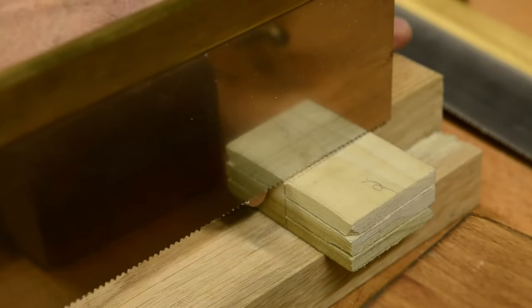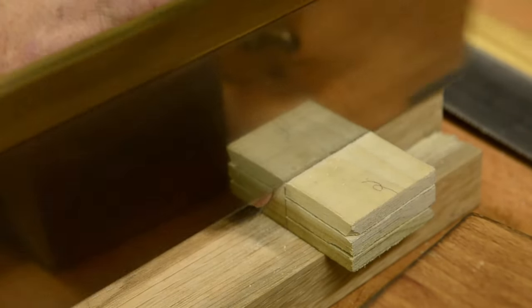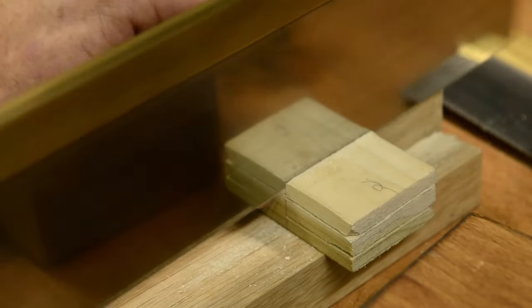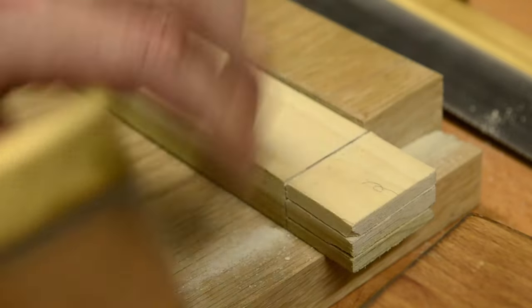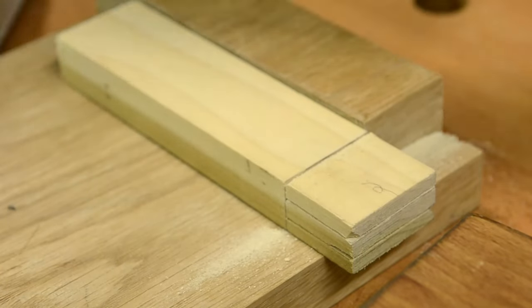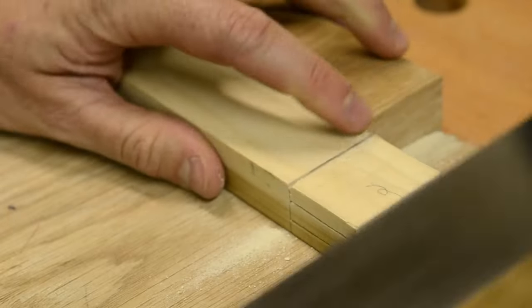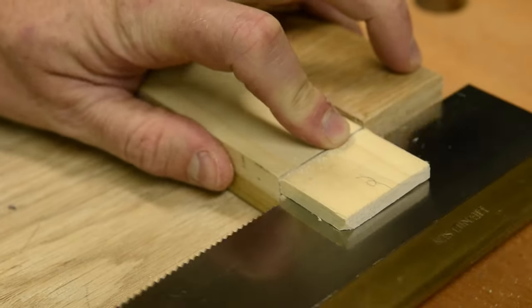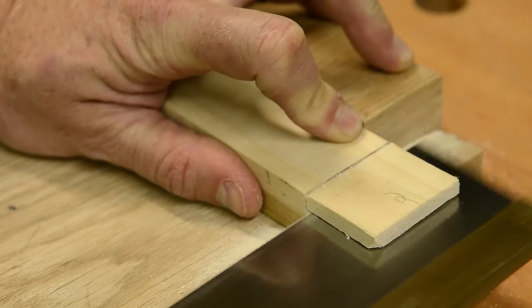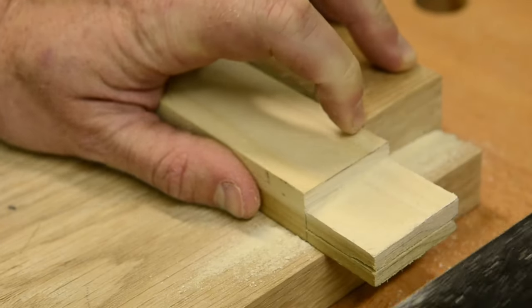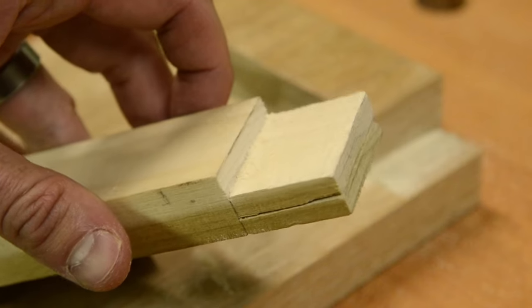Place your crosscut backsaw into the shoulder line and cut straight down to that baseline, being very careful. Either it will pop right off or else you just grab your dovetail saw and slide it in there against the cheek and just carefully trim until that cheek just pops off. And this is what it will look like.